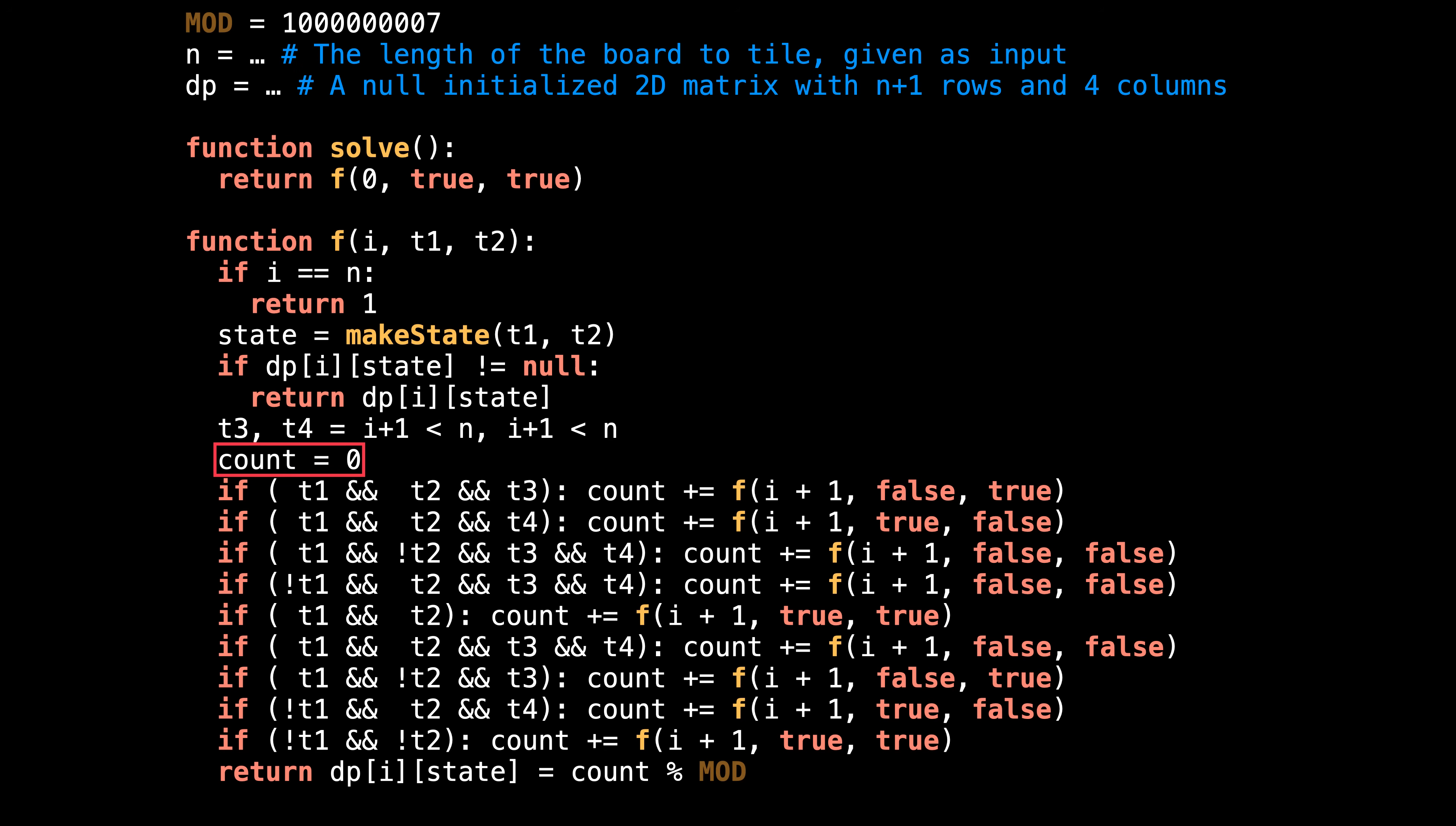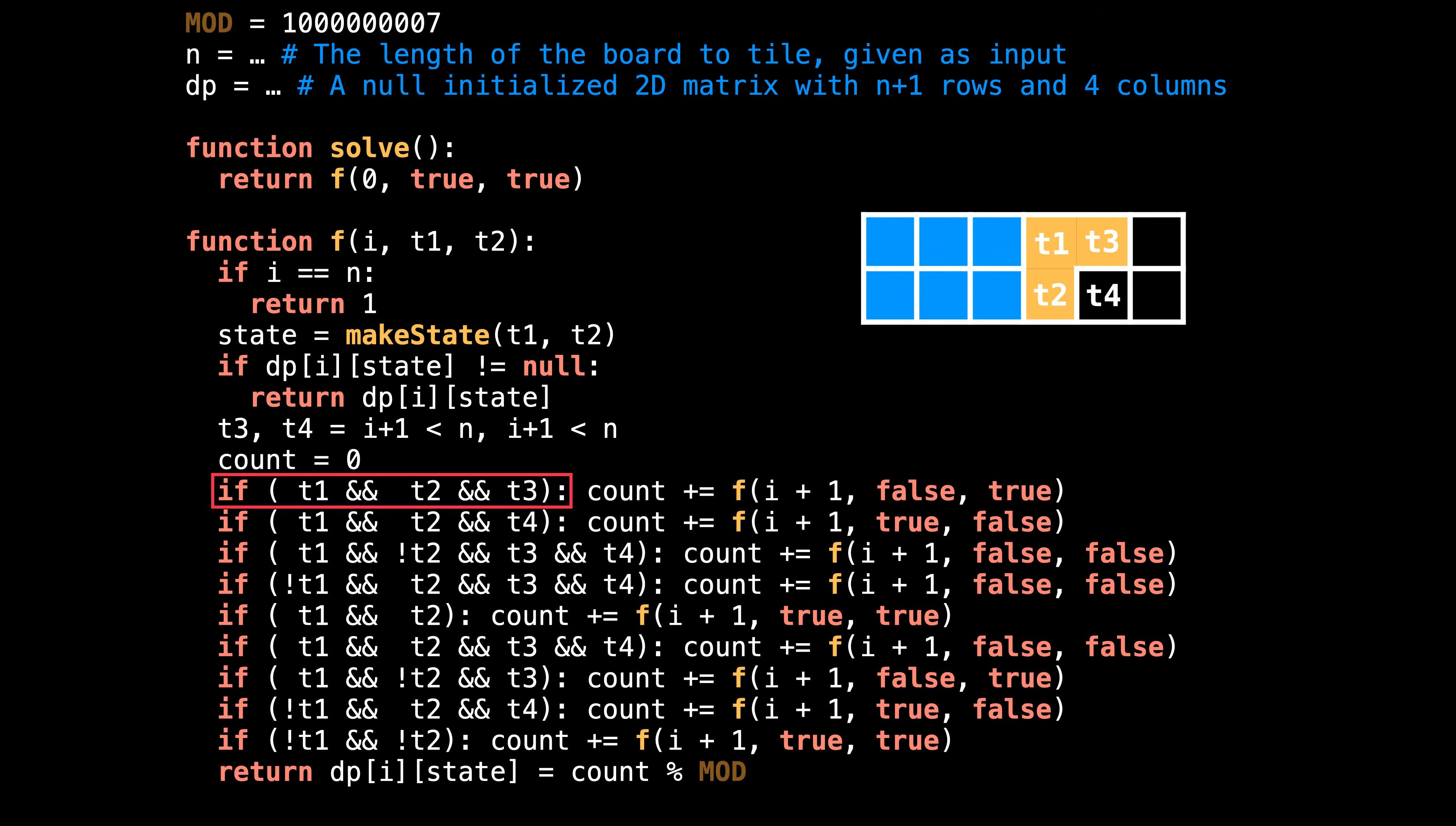The variable count tracks the number of ways to tile the current state. The various if conditions below simply place different tiles on the board depending on what the frontier looks like. As those functions return, we sum together the different ways to tile the board in the count variable. In this first line, we are trying to place a tromino over the tiles t1, t2, and t3. If those three tiles are free, we are able to place a tromino and solve for a smaller subproblem. Once the tromino has been placed, we need to call f again to finish tiling the board. When we call f, we need to specify what the next column state looks like so we can move the frontier. Since our tromino blocks the top tile, we mark that t1 is unavailable. However, the next t2 tile is still free because nothing blocks it.